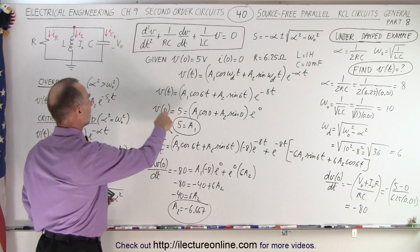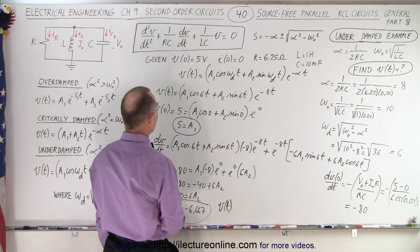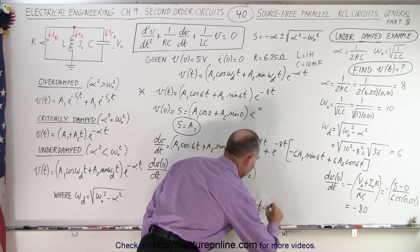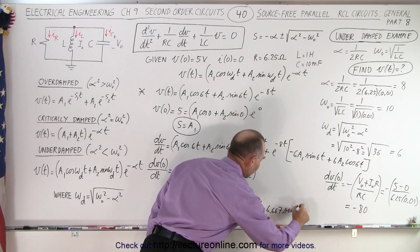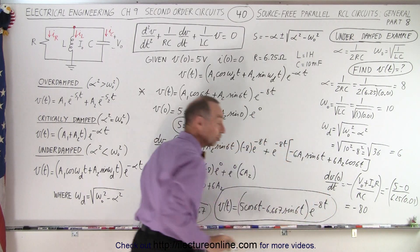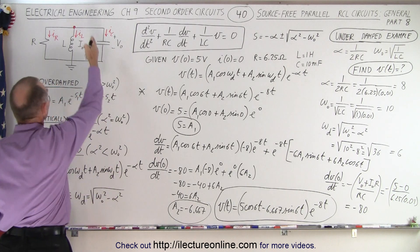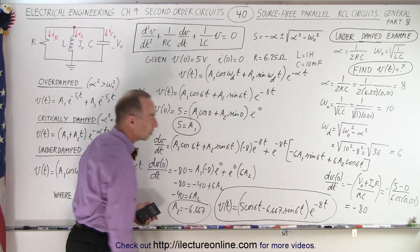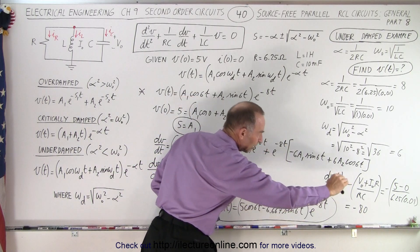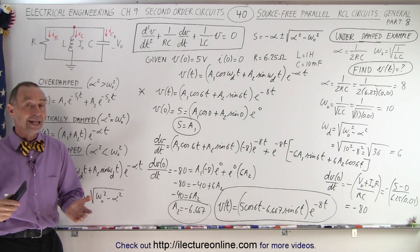Now we simply plug A1 and A2 into the equation. The voltage as a function of time equals 5 times cosine(6t) minus 6.667 times sine(6t), all multiplied by e to the minus 8t. This is the voltage equation for the underdamped circuit with R = 6.25 ohms. Notice that the oscillatory terms produce oscillation for a while, but eventually the exponential envelope causes the voltage to go to zero as t becomes large.